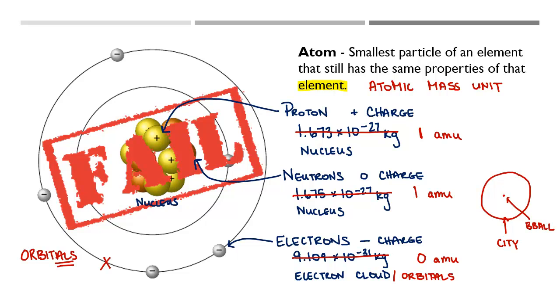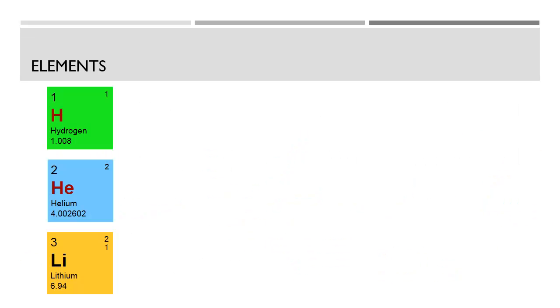The nucleus inside of that atom would be the size of a basketball. So a basketball in the center of a city is really what we're looking at here when we talk about atoms, which means that most of an atom is empty space. So you are made of mostly empty space. Depressing, I know.